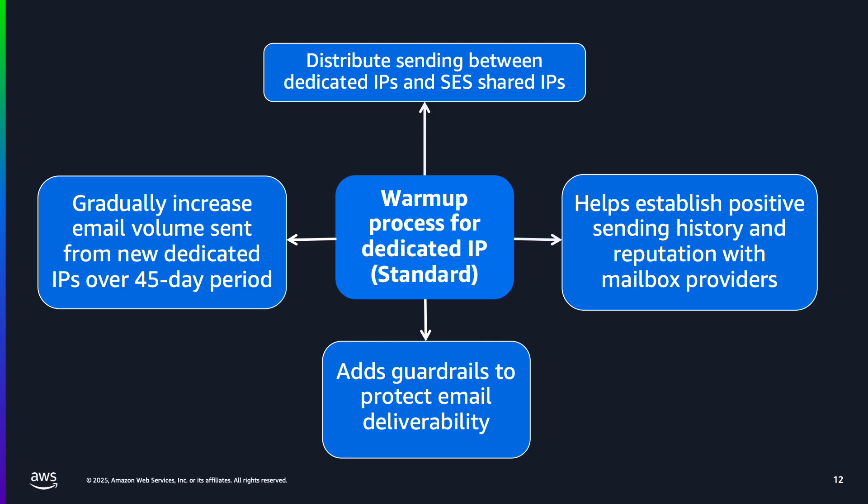The goal of the warm-up process is to ensure that email providers see a consistent, positive sending history from your dedicated IP addresses. This helps establish a good reputation and improves email deliverability. When you start sending email from a new dedicated IP address, you need to gradually increase the email volume sending from this IP and send only high-quality emails to establish a positive reputation with email providers. This process is called warming up the IP address. This gradual increase in volume is necessary because mailbox providers track the reputation of IP addresses and typically only allow higher sending volumes once they consider the IP to be of high quality.